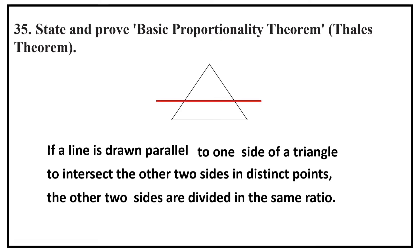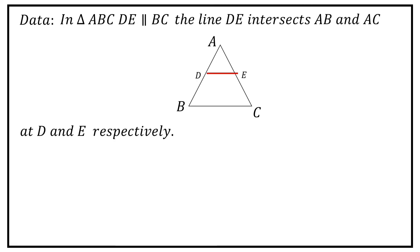the other two sides are divided in the same ratio. What is the data here? In triangle ABC, DE parallel to BC. The line DE intersects AB and AC at D and E respectively.